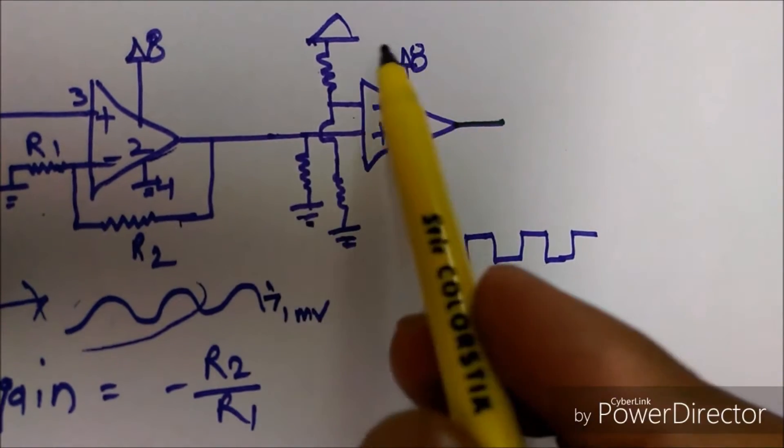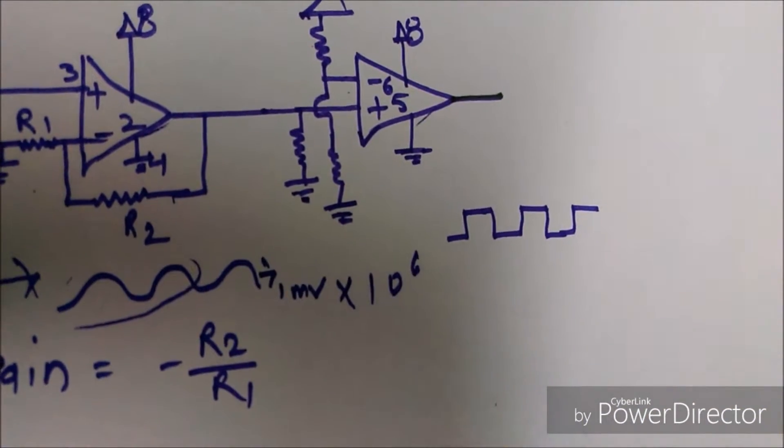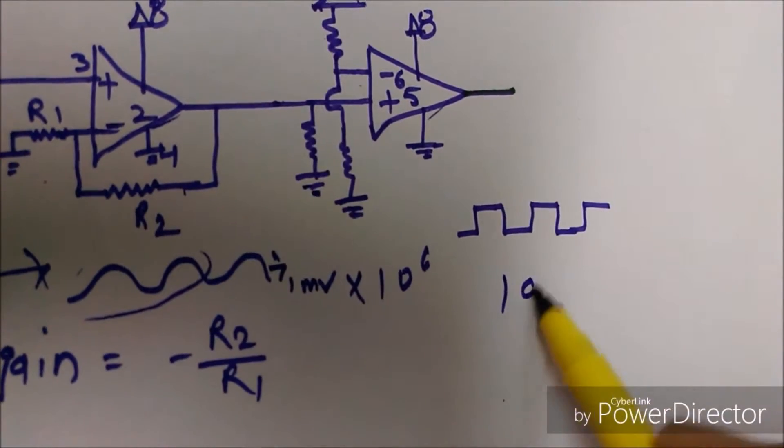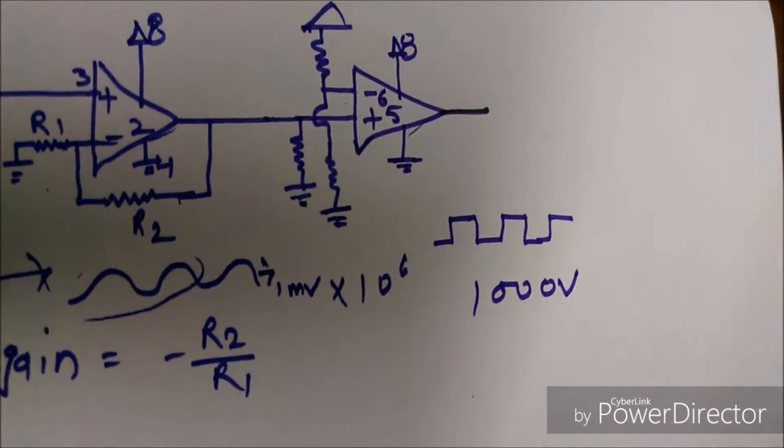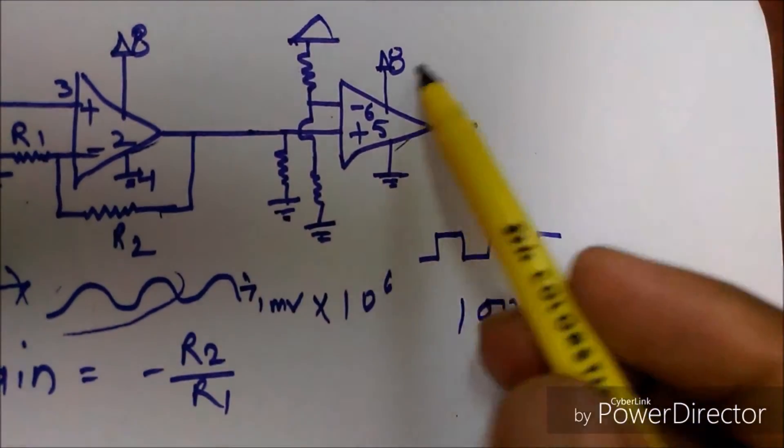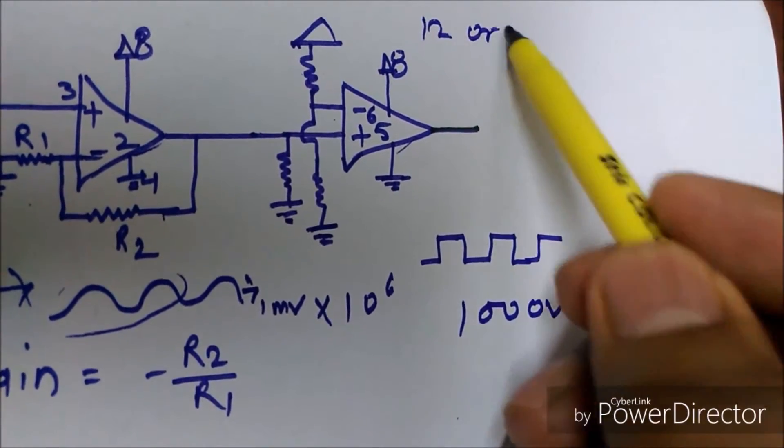So it will amplify this time. As you can see, its output would be 1000 volts, and here we give a power supply of 12 or 5 volts.